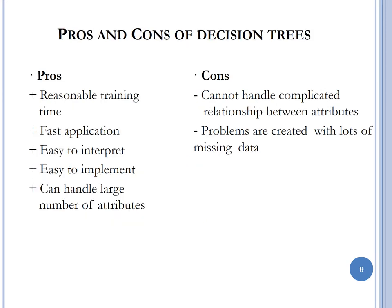Some pros and cons of decision trees: the pros are reasonable training time, quick application of results, ease of interpretation and implementation, and the ability to handle a large number of attributes. The cons are that it cannot handle complicated relationships between variables, and problems are created if you have lots of missing data — your dataset needs to be as complete as possible when executing decision trees.